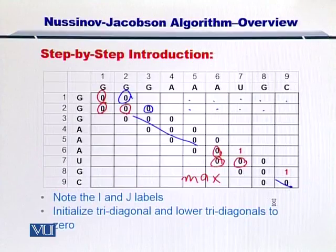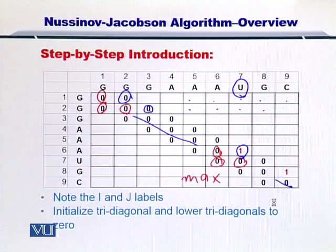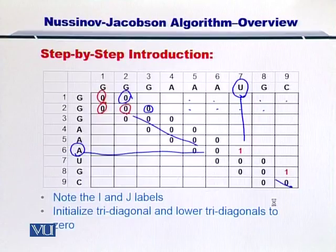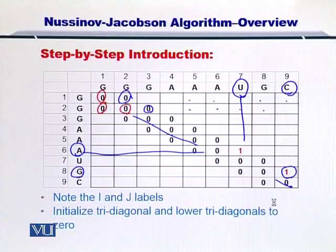But why do we have a one here? So the reason is that U can be coupled with an A. So in this case, this is the pseudo energy that is given in the equation for the NJ algorithm. Similarly, if you look at this one, this is due to the formation of bond between G and C. And the three zeros have no difference. But the diagonal element gives this one because C and G are coupled.